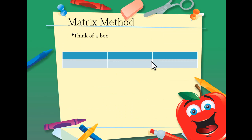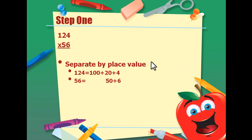When I say the matrix method, I want you to think of a box. In step 1 of the matrix method, when you're multiplying 124 times 56, you first separate the number by place value. 124 is equal to 100 plus 20 plus 4. And 56 is equal to 50 plus 6.